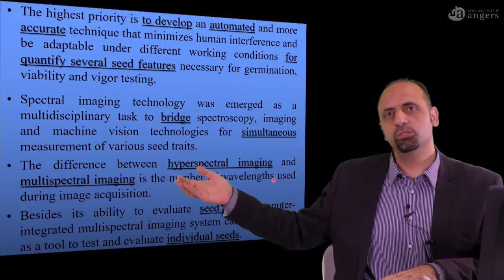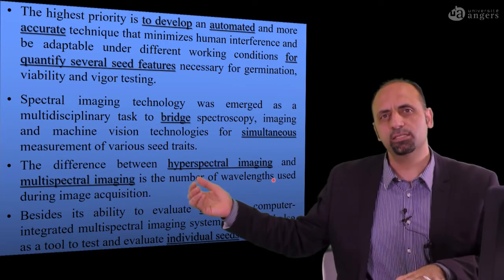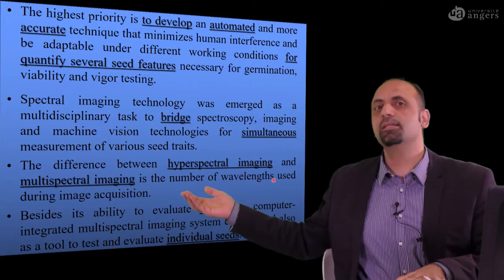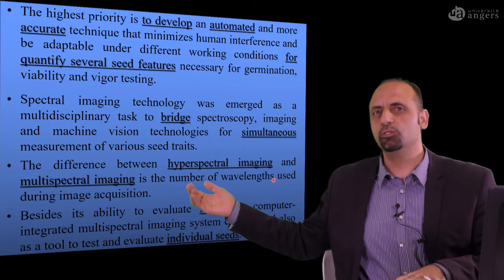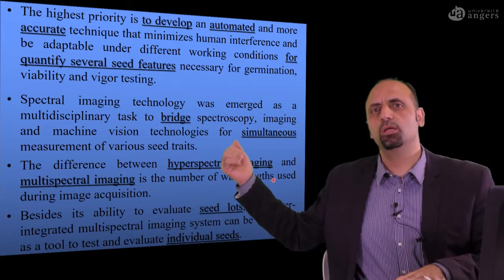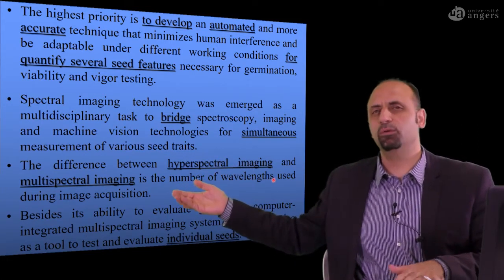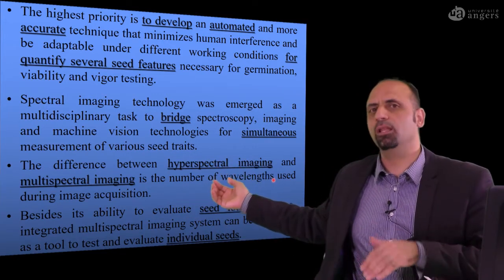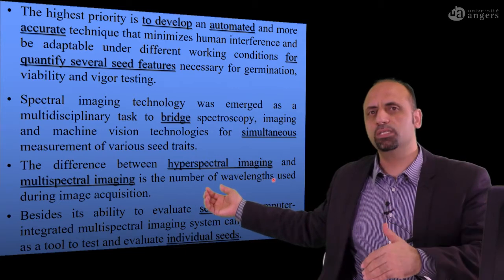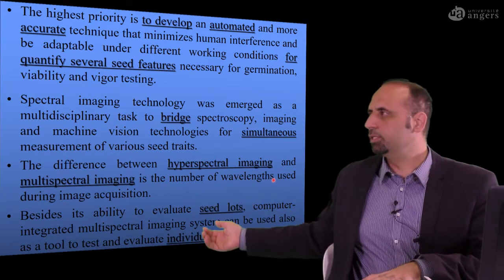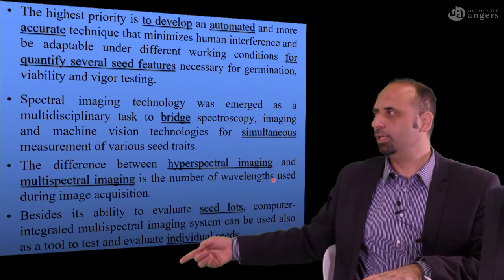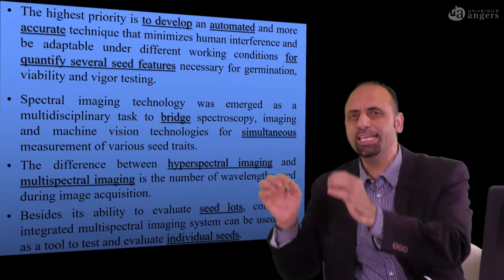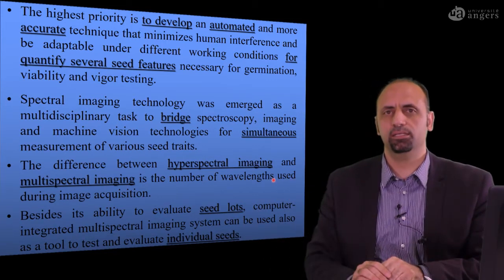As we saw from the last session, the difference between hyperspectral imaging and multispectral imaging is number of wavelengths you acquire the image at. In multispectral imaging, you have only few wavelengths. In hyperspectral imaging, you have a lot of contiguous, narrow bands. We need to use multispectral imaging for quality evaluation, not only for the seed lot, but for each single seed inside the seed lot.